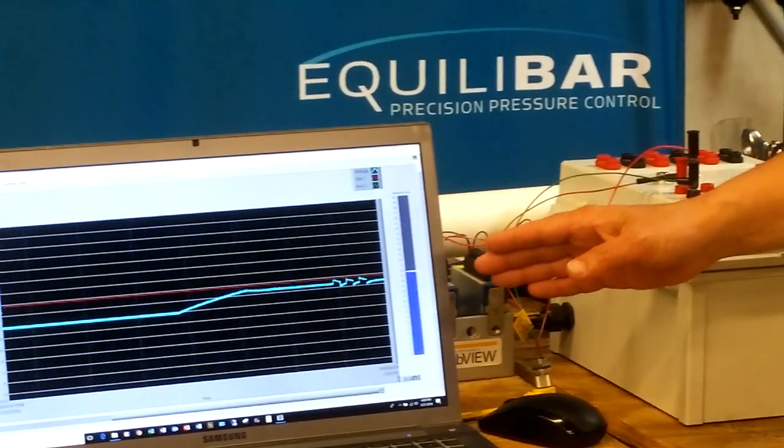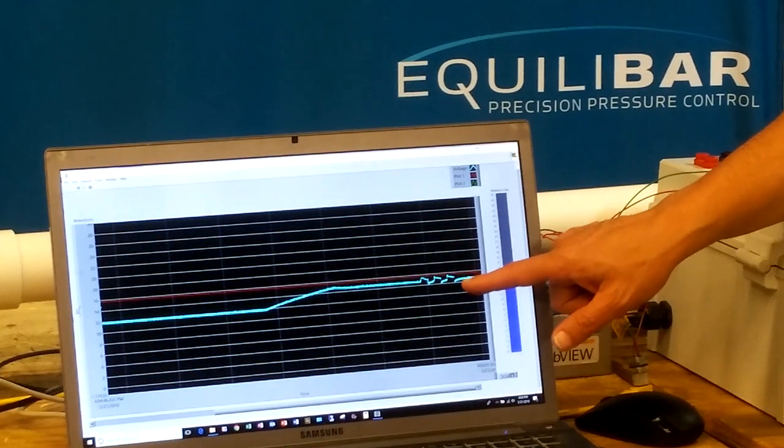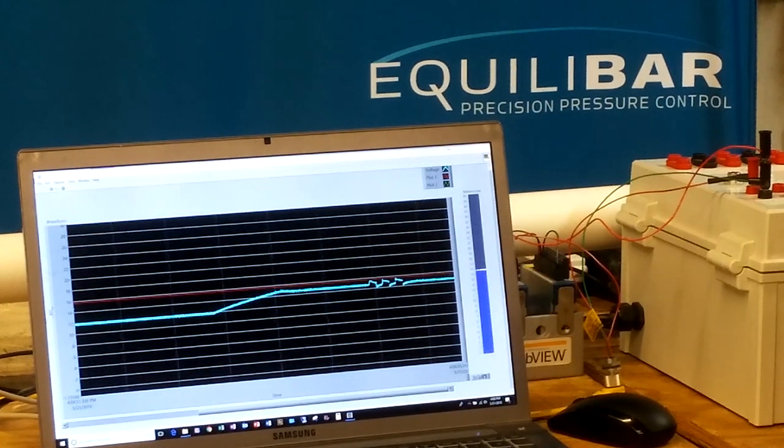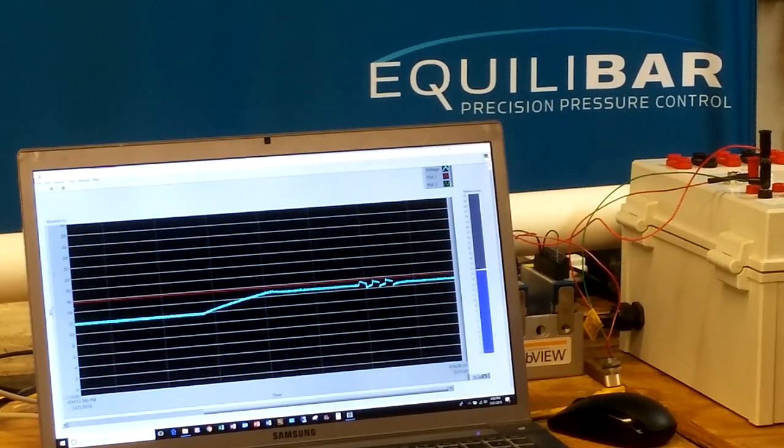And now if we come back over to the chart recorder, we'll see that each time I actuated that valve, we only got a small disturbance in the actual vacuum pressure. Let's see that one more time.